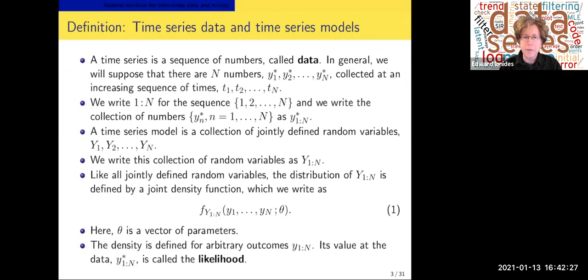A time series model is a collection of jointly defined random variables Y1, Y2 through Yn, which using the same compact notation we write as Y1:n. Like all jointly defined random variables, the distribution of Y1:n is defined by a joint density function, which we write as fY(1:n) of little y1 through little yn given the parameter theta. The density is defined for arbitrary outcomes y1:n, and its value at the data y star is called the likelihood.